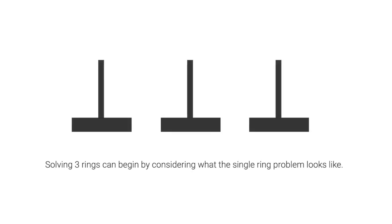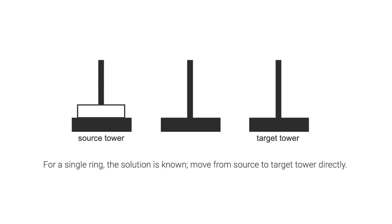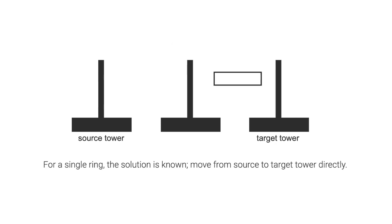Solving three rings can begin by considering what the single ring problem looks like. For a single ring, the solution is known: move from source to target tower directly.